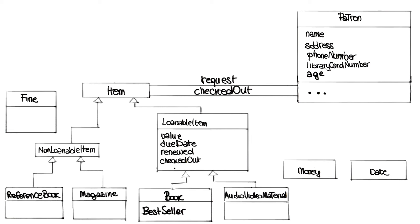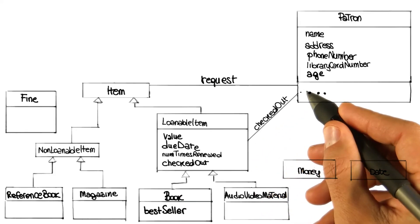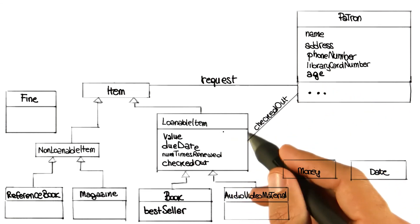The way you've got the lines in the diagram, you still have request and checkout going to item, even though you can't request or check out non-loanable items. Oh, you're right — you got me on that one. These associations are between the wrong classes. Can we just make the lines go from patron to loanable item instead of to item? That's exactly how we're going to fix it. We're going to move these two associations down, and at this point it will represent the right relationships in the diagram and in the system. Makes sense to me.